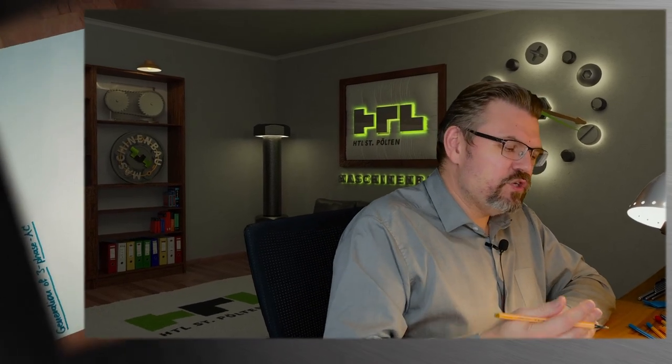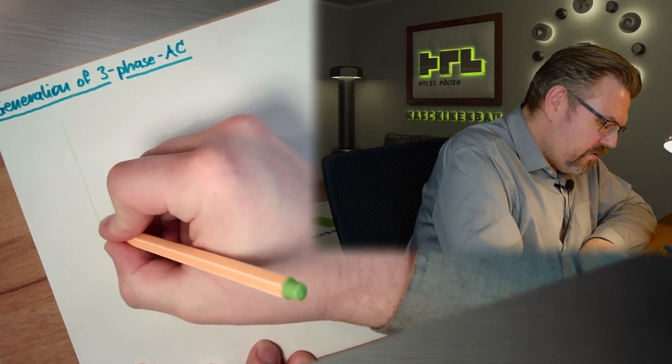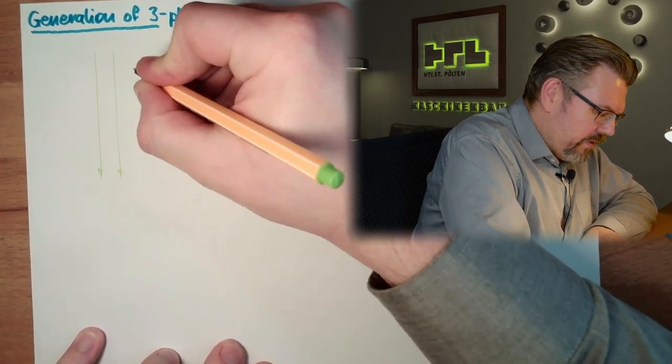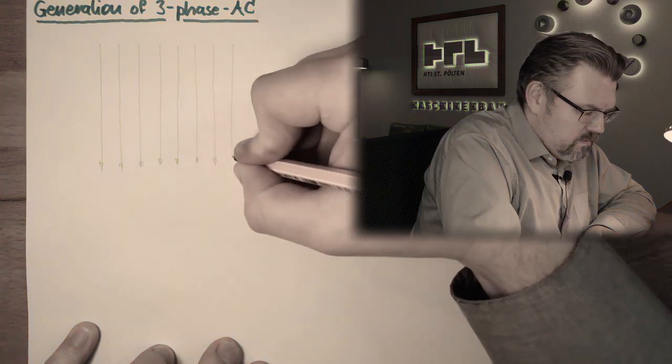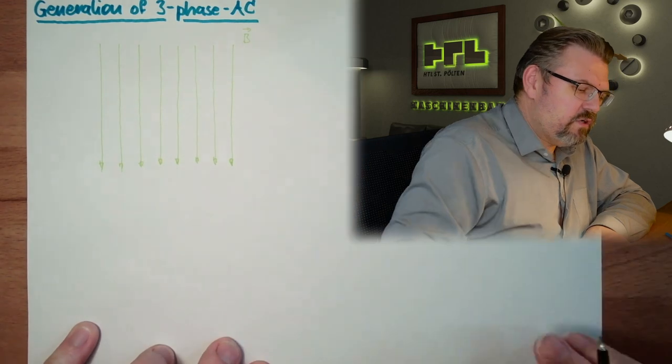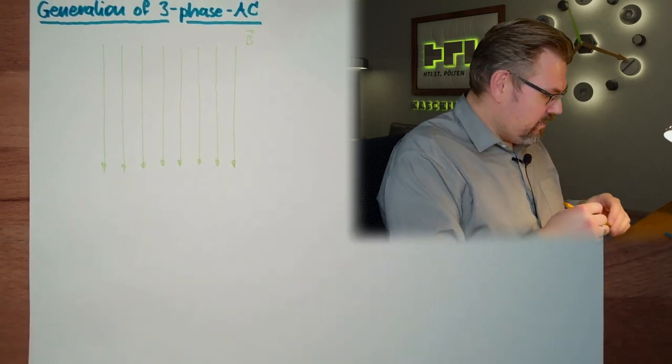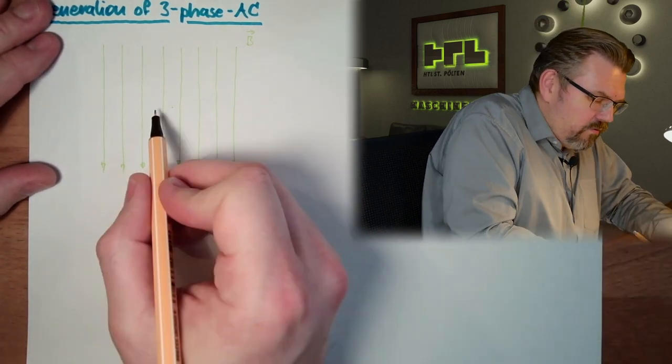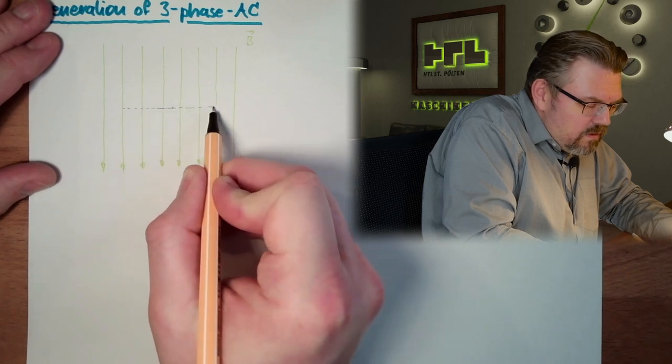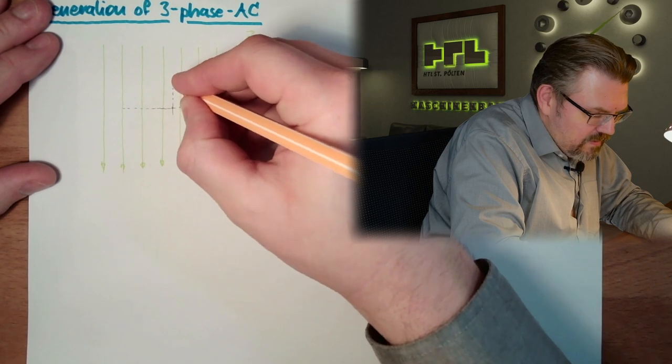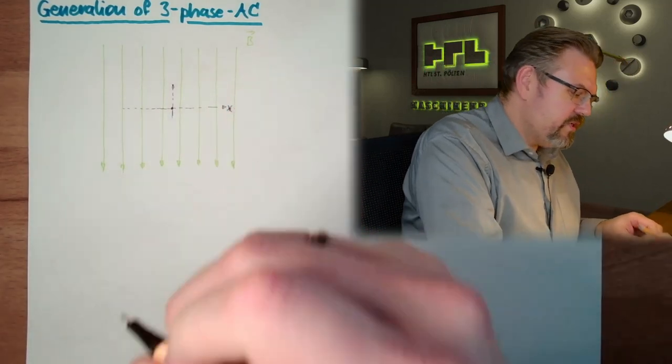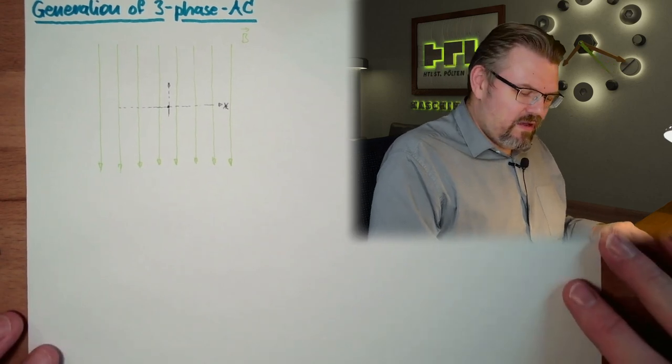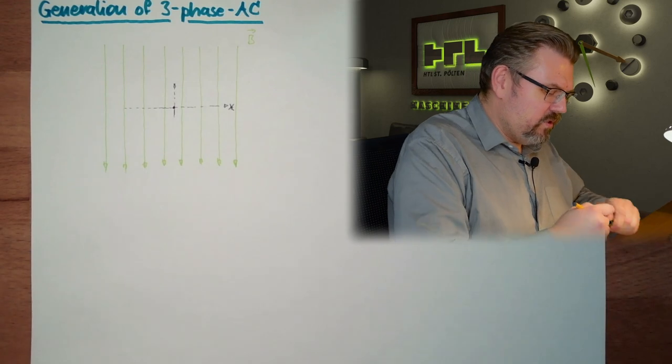Actually we have a stationary magnetic field. I'll draw this here now. We have somewhere a magnetic field, I'll point this down here. That's our magnetic field. We have an induction of B, flux density of B. And I will draw in here now an origin point. Here is the x-axis, here is the y-axis. I have here an origin point. And I have a coil.